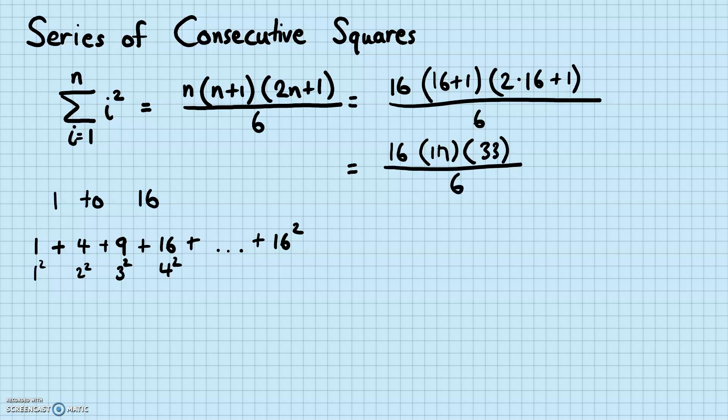So if you do that on the calculator, you'll see that you'll get 1,496. So if you add up all these numbers like this, you'll get 1,496. That's how you add consecutive squares.